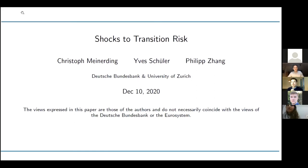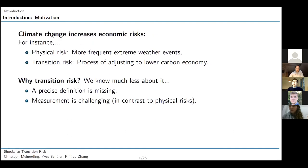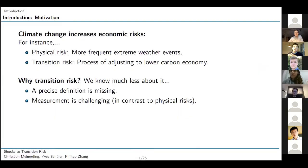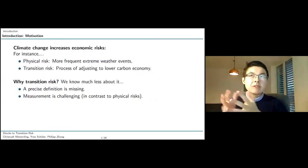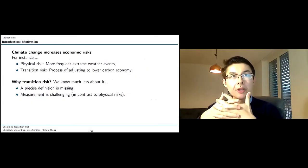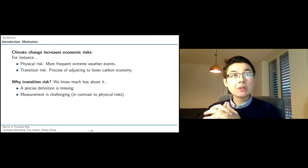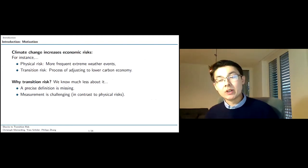Thank you for coming. My name is Philip Zhang. I am a PhD candidate in economics at the University of Zürich and it is my great pleasure to present to you today our paper titled Shocks to Transition Risk co-authored with Christoph Meinerding and Yves Schüller both at Deutsche Bundesbank. So what is this paper about? Basically the purpose of this paper is to measure shocks to transition risk. The motivation should be quite clear. We all know of the importance of climate change and understanding how climate change will affect society.